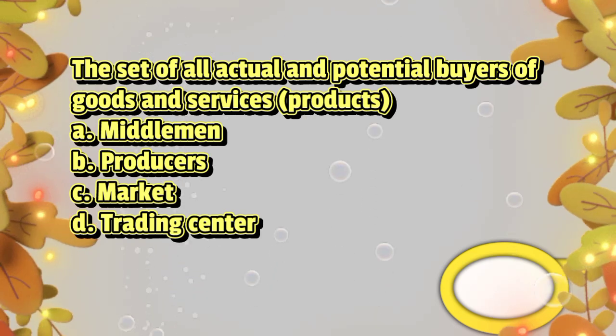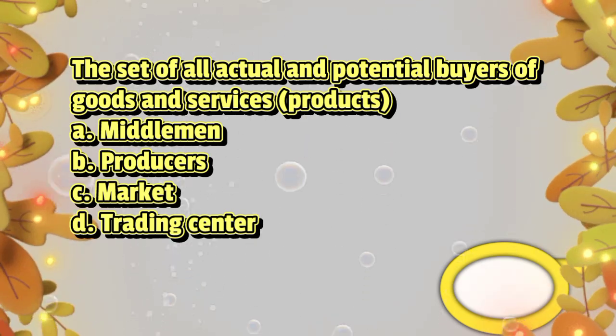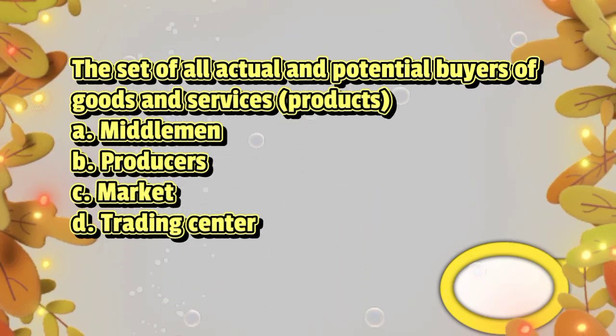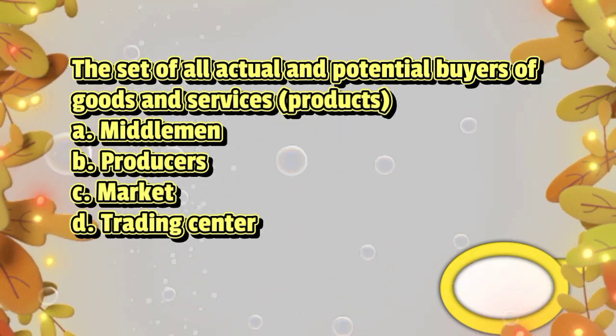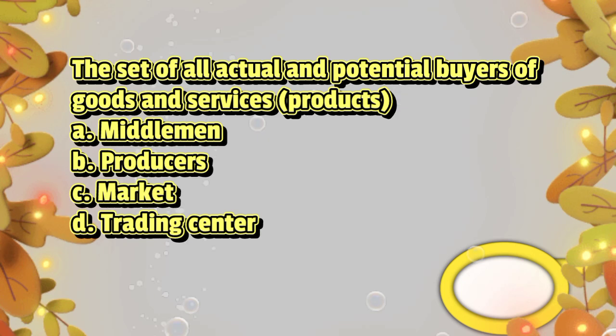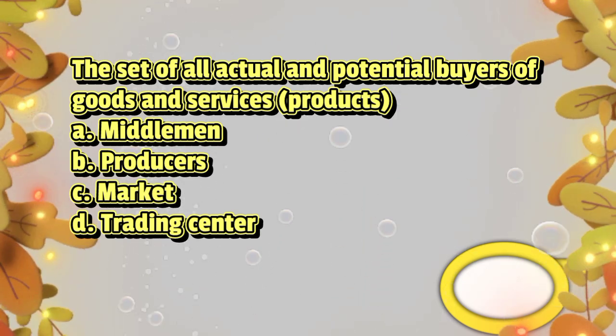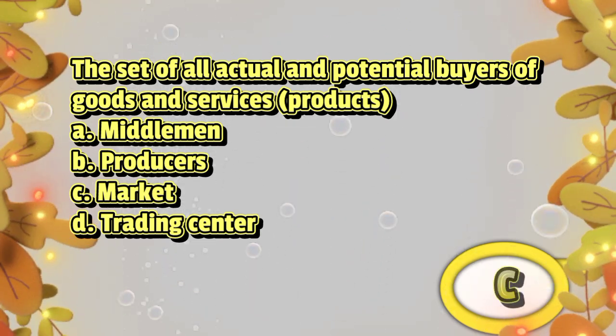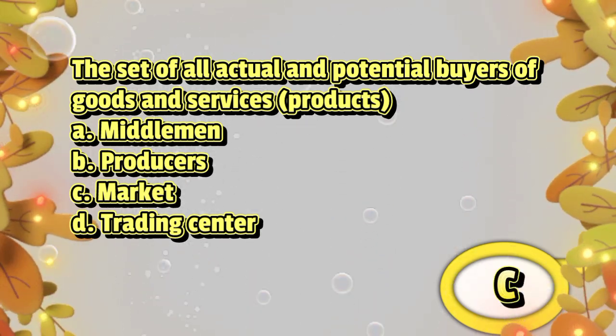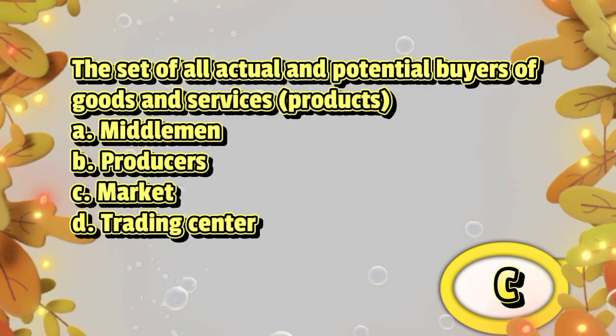The set of all actual and potential buyers of goods and services or products: A. middlemen, B. producers, C. market, D. trading center. The answer is letter C.